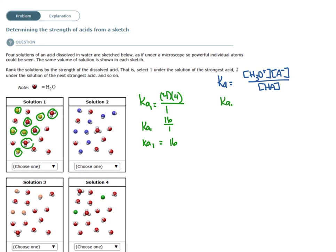And let's do the same for the second solution. H3O plus, I see only one. A minus, I only see one. HA, I see one, two, three, four, five, six, seven.